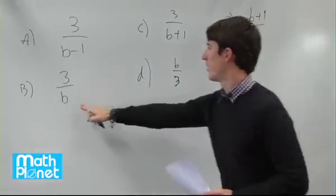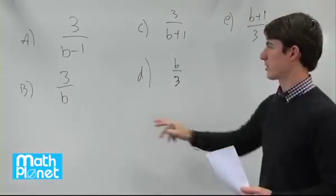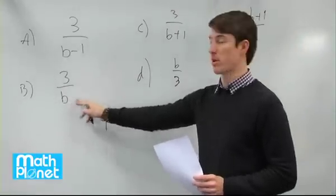If b is bigger than 3, then we know that this one will give us a smaller number than this one.